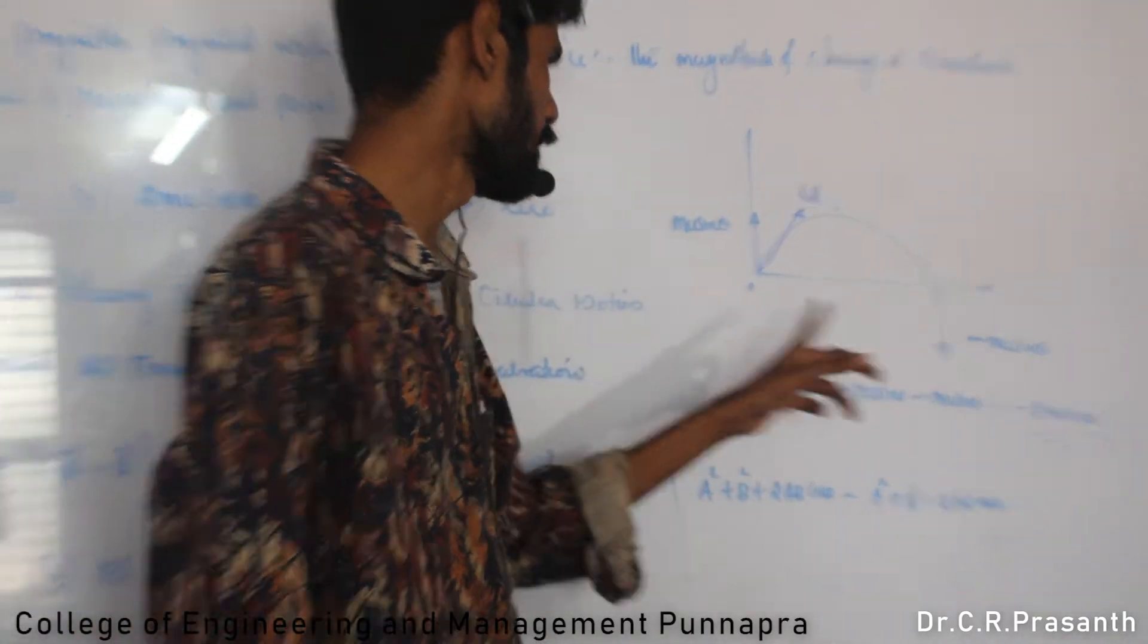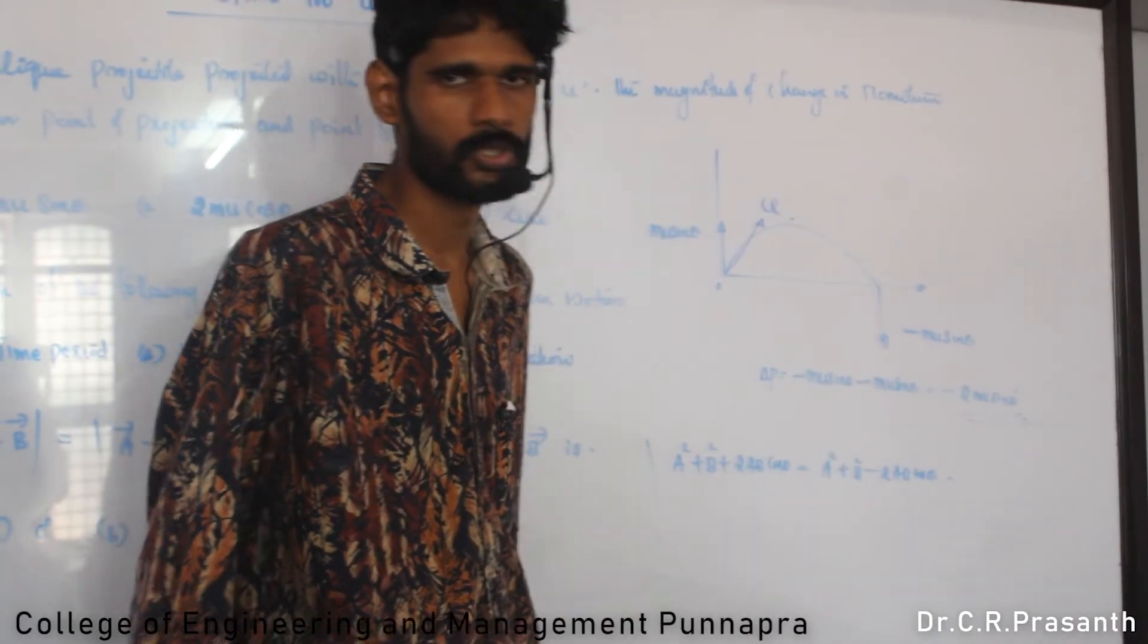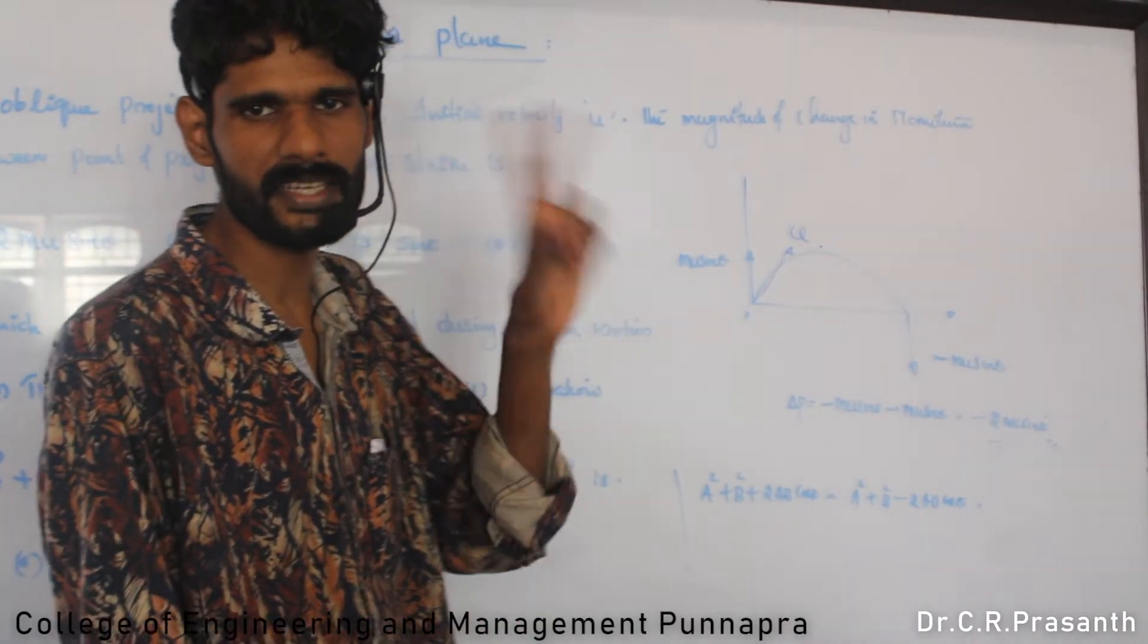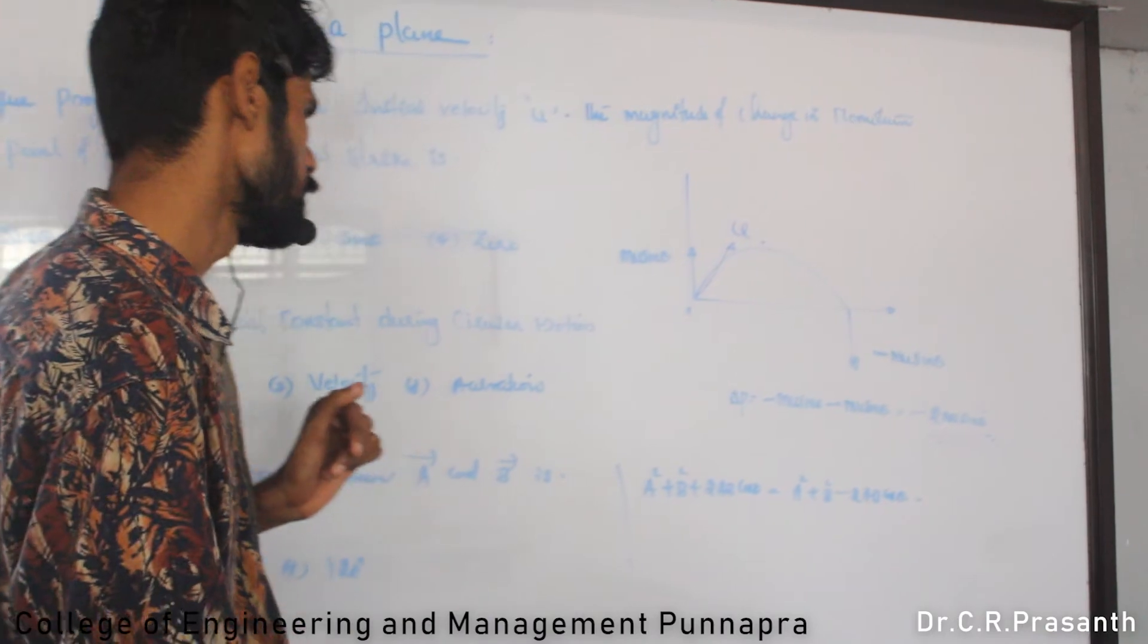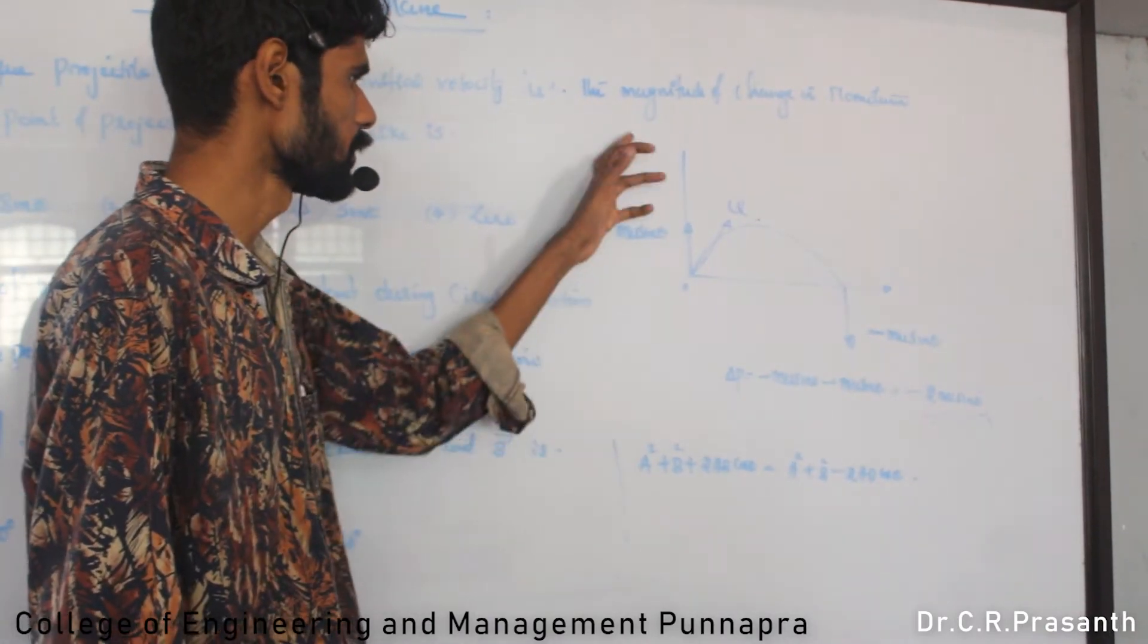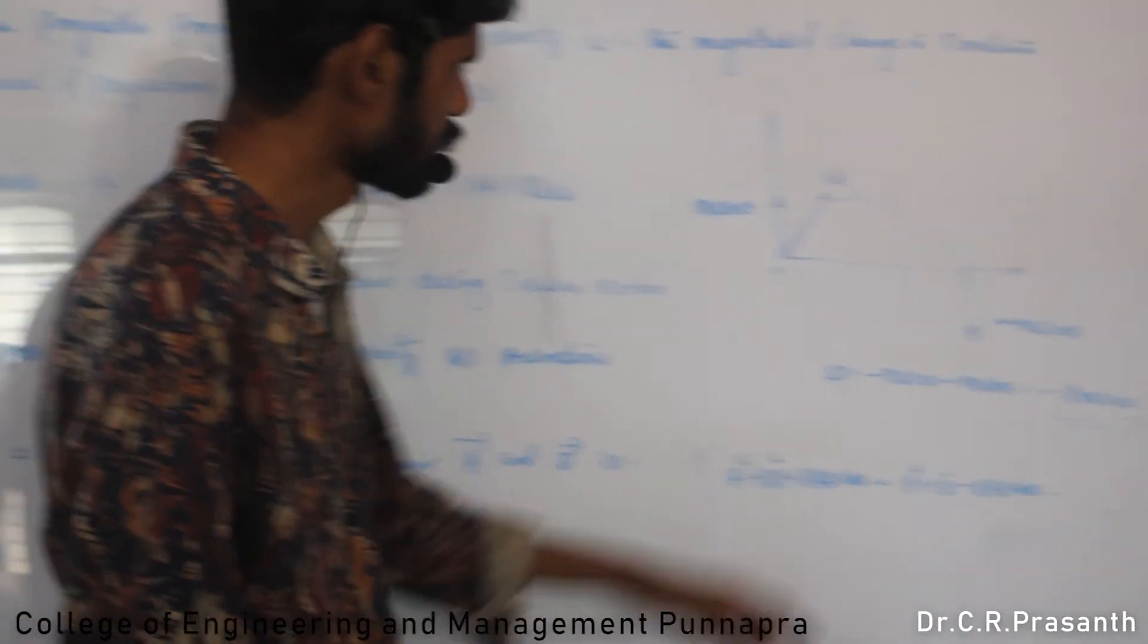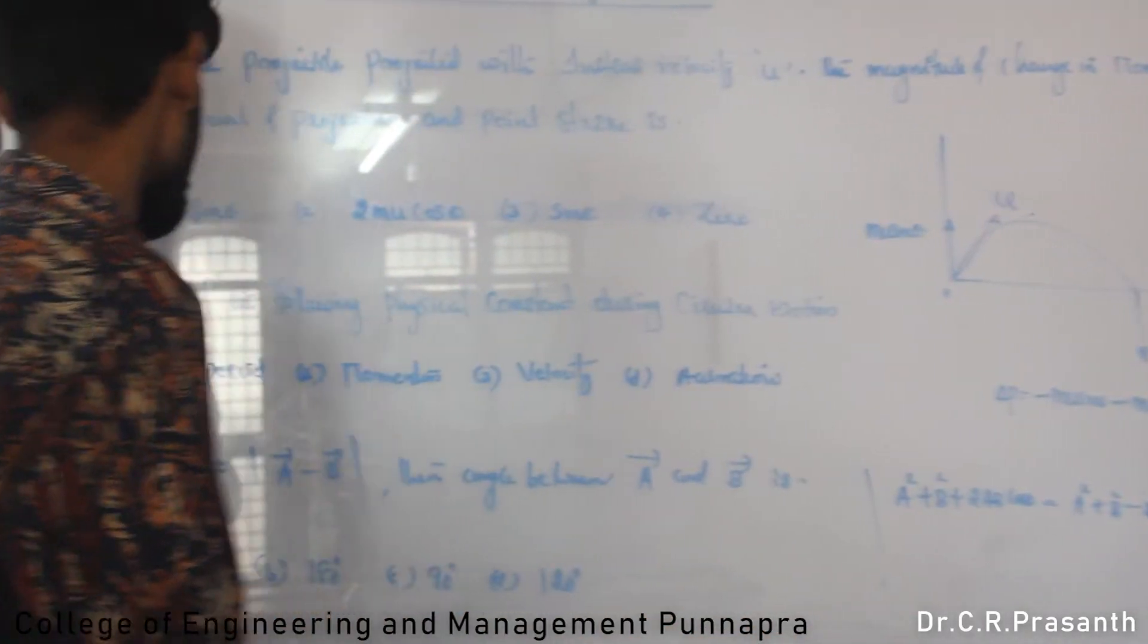The direction of change in momentum: initially m u sin theta upward, finally minus m u sin theta downward. There's no change in momentum in the horizontal direction because the horizontal component of velocity is constant. Change in momentum in y direction: minus m u sin theta minus m u sin theta equals minus 2 m u sin theta in the j direction.